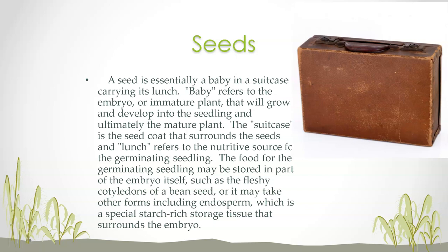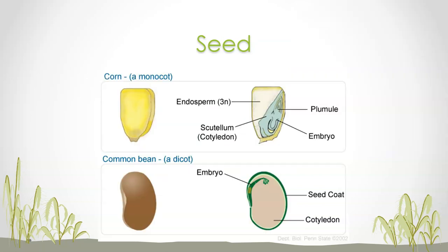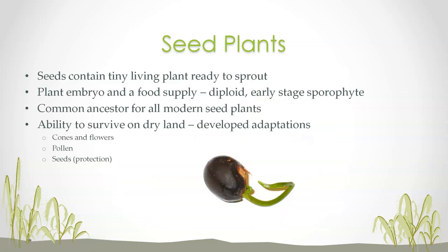Seeds are obviously an advantage for survival. Basically, a seed is a baby in a suitcase carrying its lunch: the baby is the immature plant, the suitcase is the seed coat surrounding it, and the lunch is the nutritive source for the germinating seedling. That's why we eat seeds. There are different types — monocot, dicot — with examples like corn and common bean. Seed plants came about because they carry tiny living plants ready to sprout. This was an advantage as far as secular evolution goes. Here is the secular evolution common ancestor for all modern seed plants.